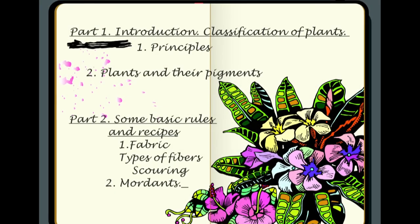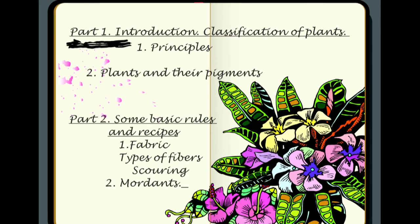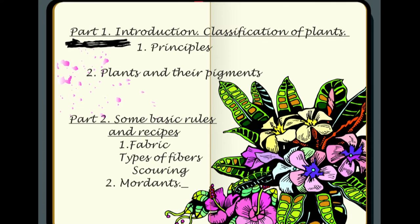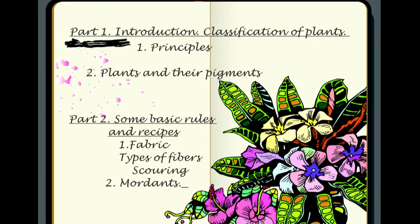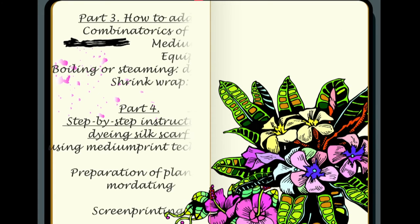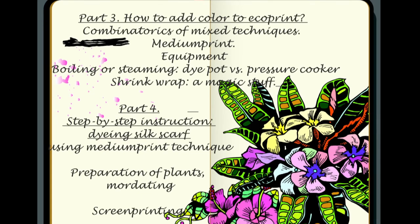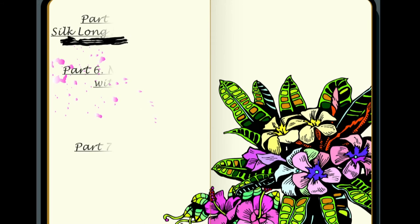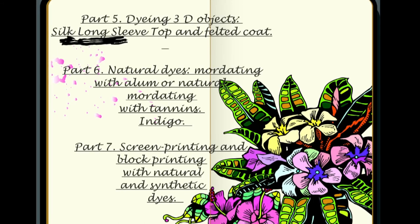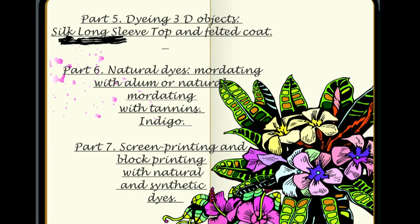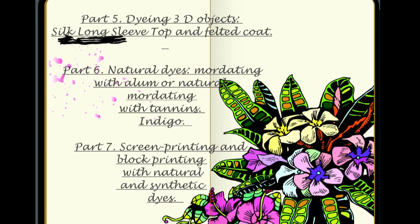This video contains the following parts: Part 1 — Introduction, classification of plants, principles, plants and their pigments, some rules of thumb for choice of plants. Part 2 — Fabric, types of fabric, scoring, mordants. Part 3 — How to add color to eco print, combinatorics of mixed techniques, medium print, equipment. Part 4 — Dyeing a silk scarf using medium print. Part 5 — Dyeing a 3D object, silk long sleeve top, and felted coat. Part 6 — Natural dyes, mordanting with alum, mordanting with tannin, indigo. Part 7 — Screen printing and block printing.